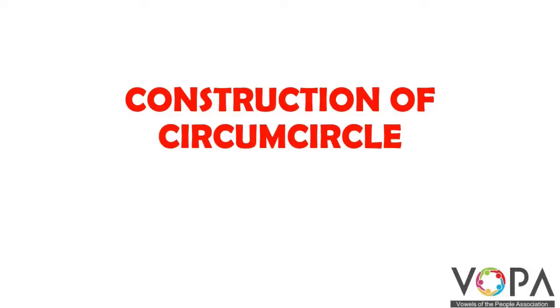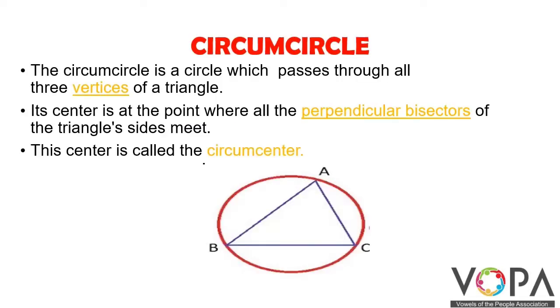The next construction we are going to learn is the construction of a circumcircle. What is a circumcircle? The circumcircle is a circle which passes through all three vertices of a triangle. Its center is at the point where all the perpendicular bisectors of the triangle sides meet.